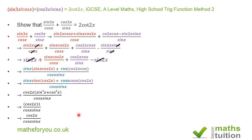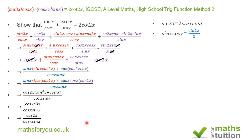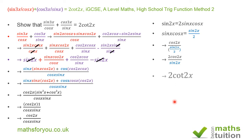Now, sin²(x) plus cos²(x) equals 1. And since sin(2x) equals 2sin(x)cos(x), then sin(x)cos(x) becomes sin(2x)/2. So I replace the denominator with sin(2x)/2, giving cos(2x) divided by sin(2x)/2. The 2 moves to the numerator, giving 2cos(2x)/sin(2x). And cos(2x)/sin(2x)... wait — so finally we have 2cos(2x), which is what was required.